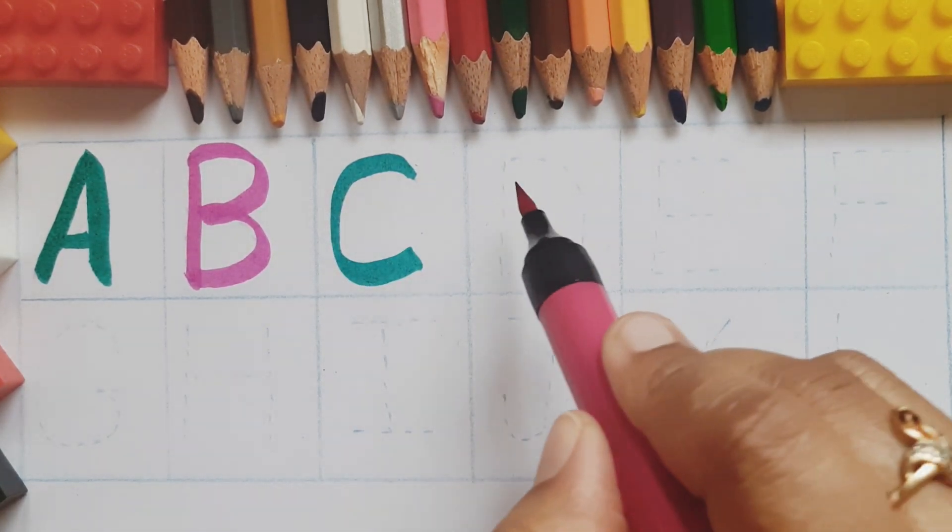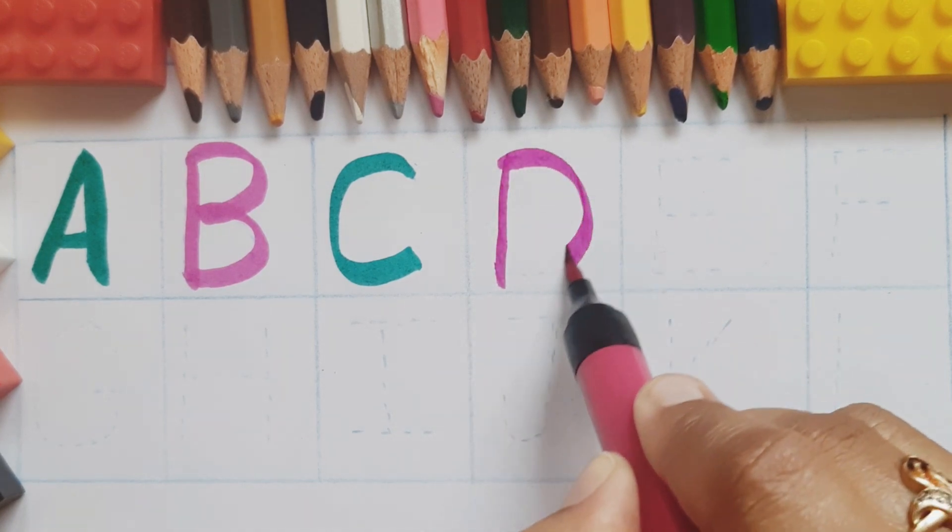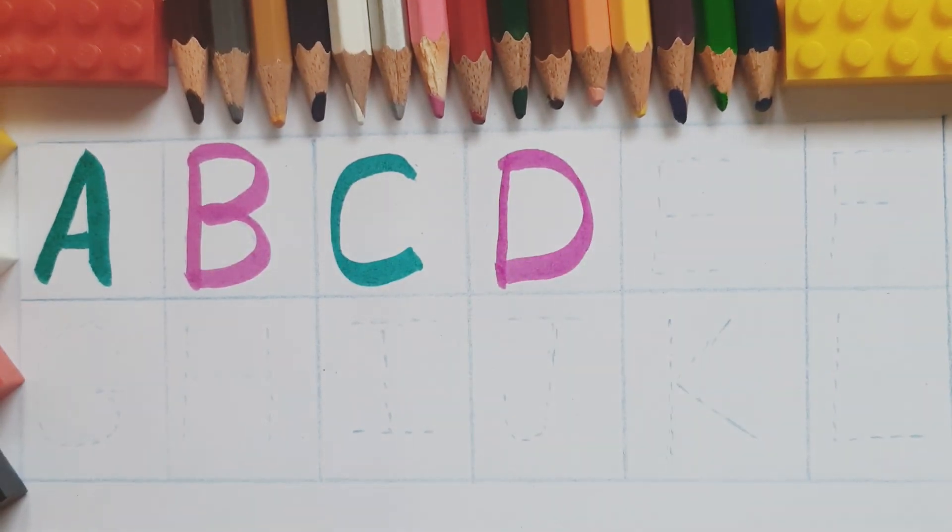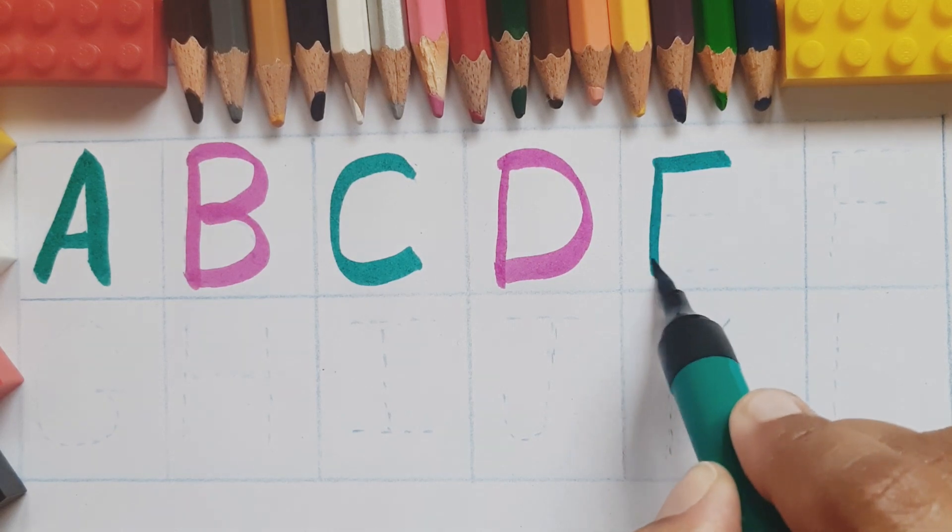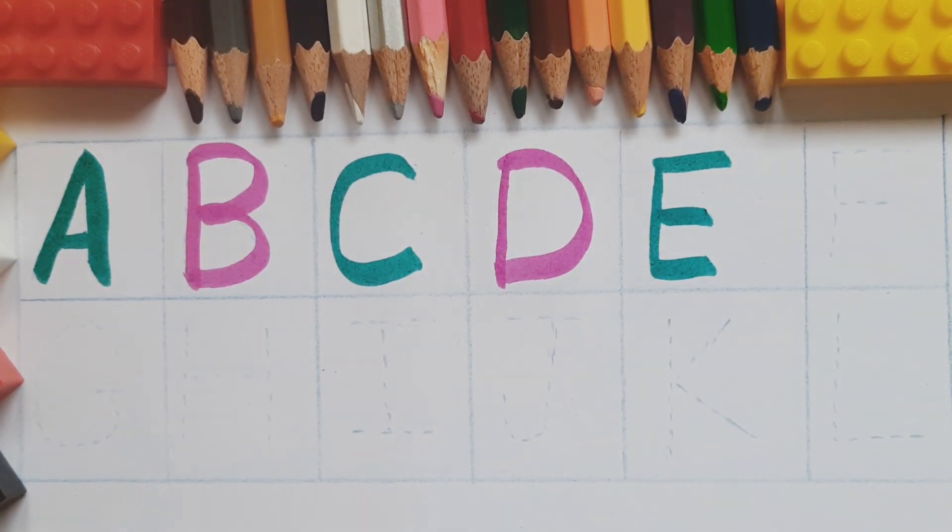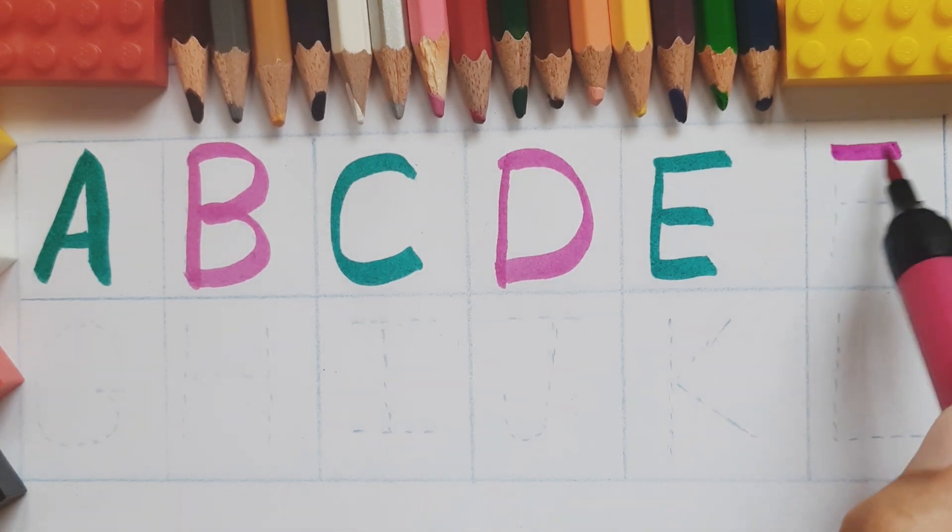C for cat. D, D for duck, D for drum. E, E for egg, E for elephant. F, F for...